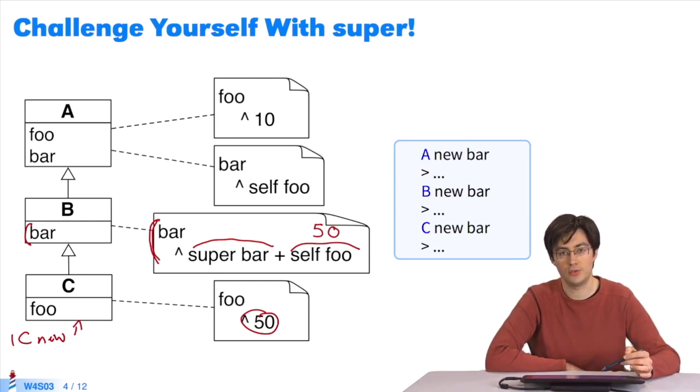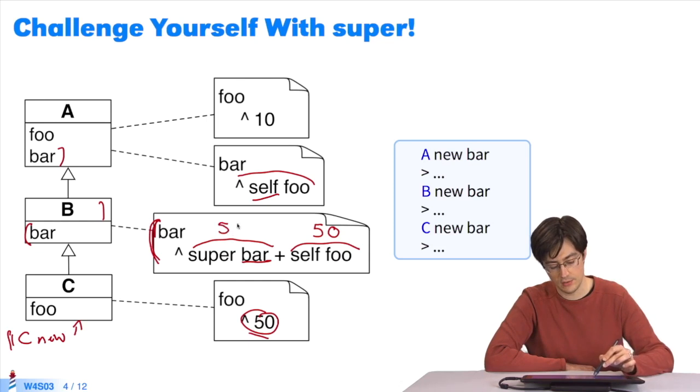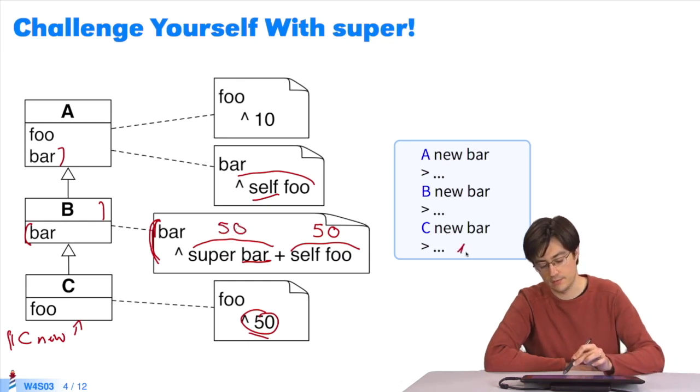I send the message bar to super, always the receiver. But the lookup algorithm changes. It looks for bar in the super class for the class containing super. That is, bar method in class B. The algorithm starts looking up bar in B's super class, which is A. Bar is located here. This bar is executed. Self is still C new, always the receiver. We send it the message foo. The result is 50, and I have 50 here. 50 plus 50 equals 100.